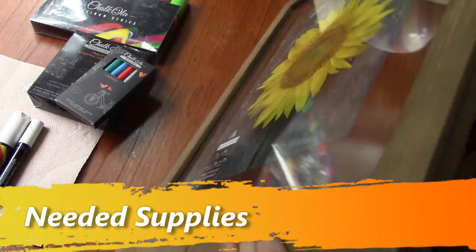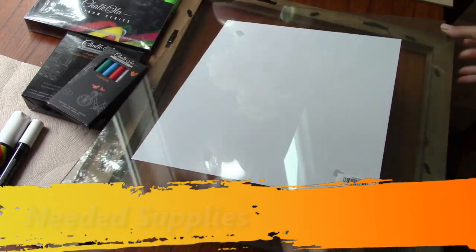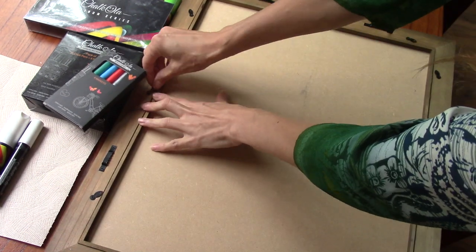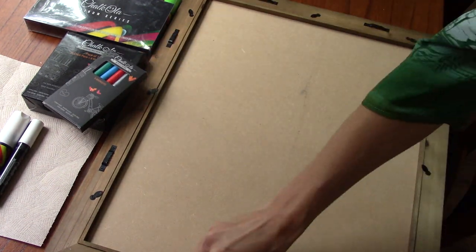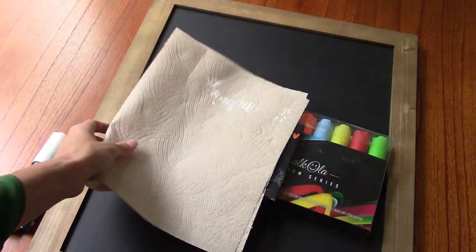What I'm using for this project is a float frame that I took out the glass, and then I just placed a chalkboard panel that you can get at a hardware store. I cut it to size and placed it inside of the float frame.